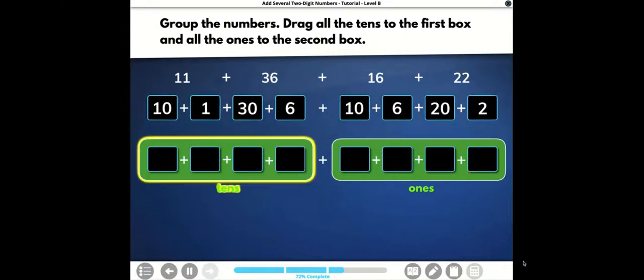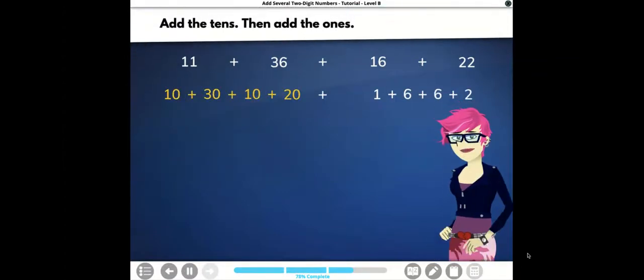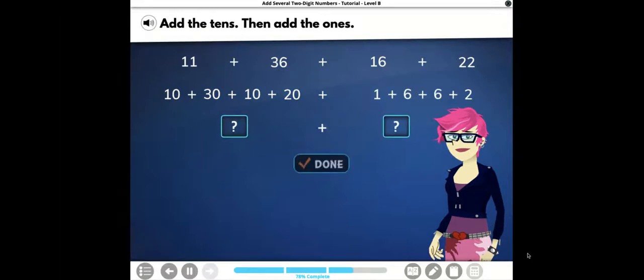Sweet. The tens are 10, 30, 10, and 20. The ones are 1, 6, 6, and 2. Add the tens. Then add the ones. All right, let's do it, boys and girls. We have 10 plus 30 is 40. 40 plus 10 is 50. 50 plus 20 is 70. Then I come over to my ones. I have a double fact here. I know 6 plus 6 is 12. Plus 1 is 13. Plus 2 is 15. Well, that was totally calculus-licious.